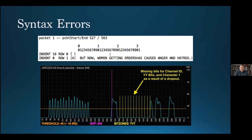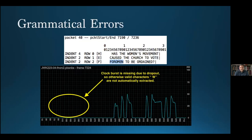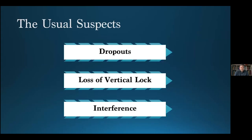Syntax errors occur when malformed or missing control data fails to produce a valid, completely displayable caption. In one example, the loss of a single decoder command likely would have resulted in the third row of a caption not being displayed. With grammatical errors, either the wrong characters are present or they're missing entirely. In one case, both the space and the letter W are missing from a caption because the clock burst is absent, rendering the transmitted data unrecognizable. The causes of both syntax and grammatical errors can be manifold — usually the result of dropouts, loss of vertical lock, or interference, any of which can cause partial or complete signal loss.